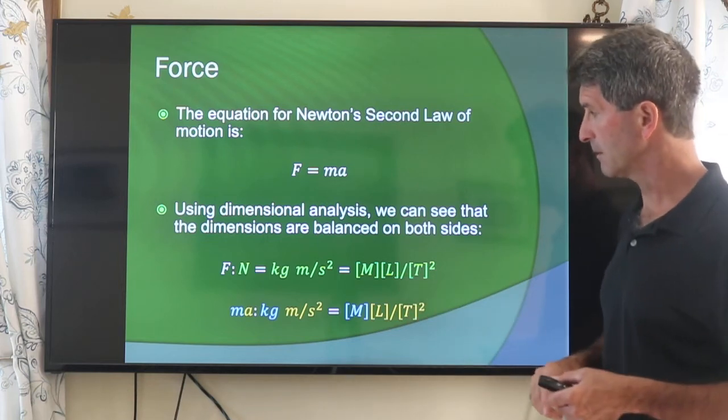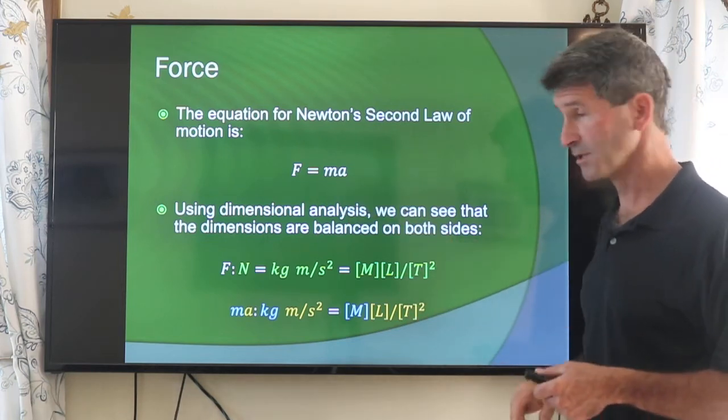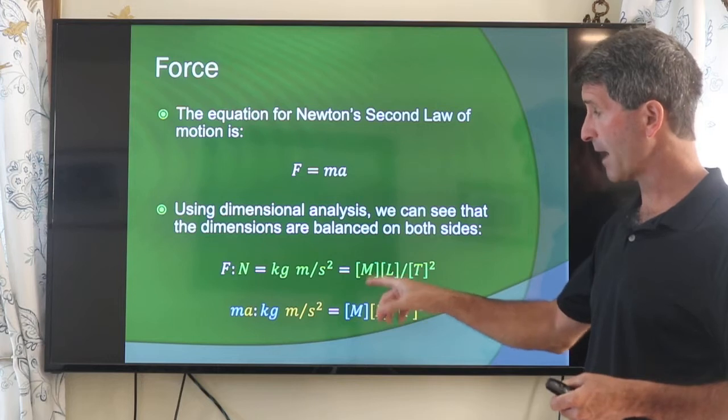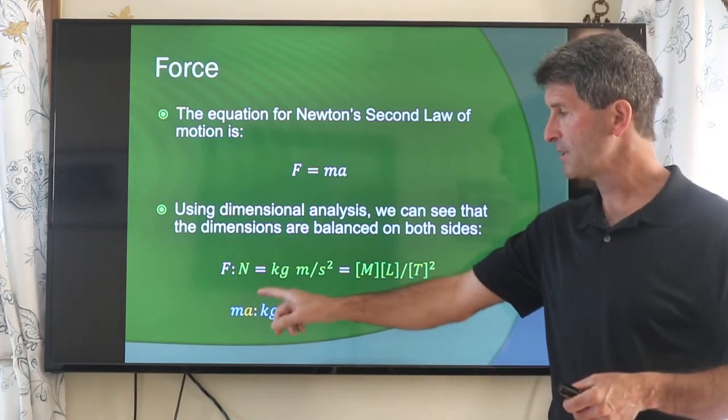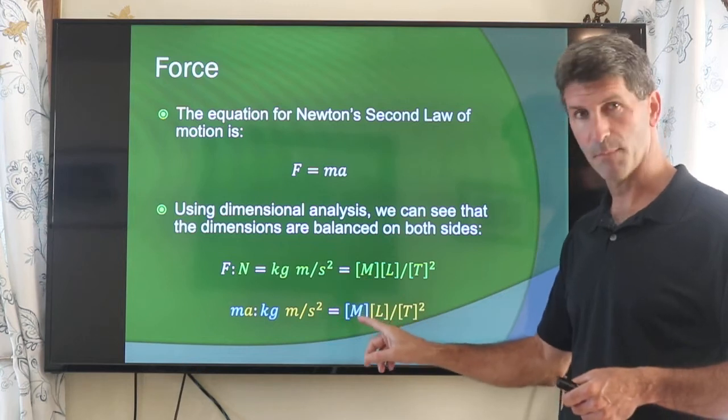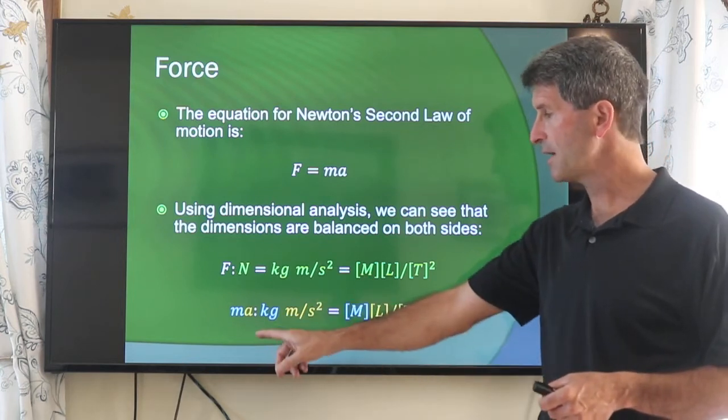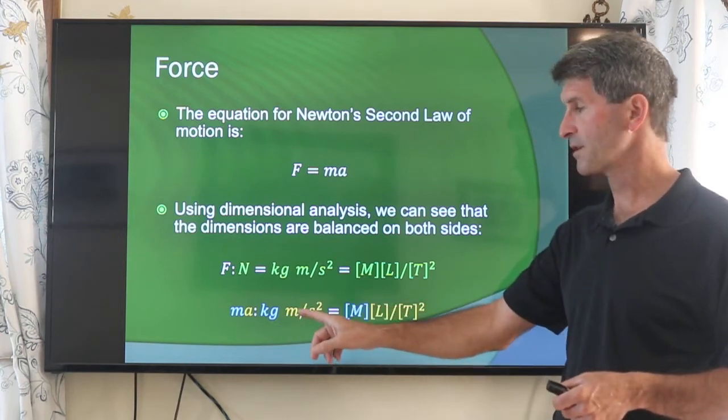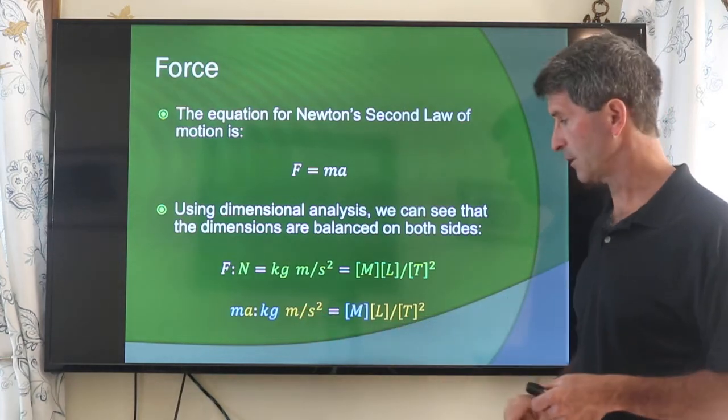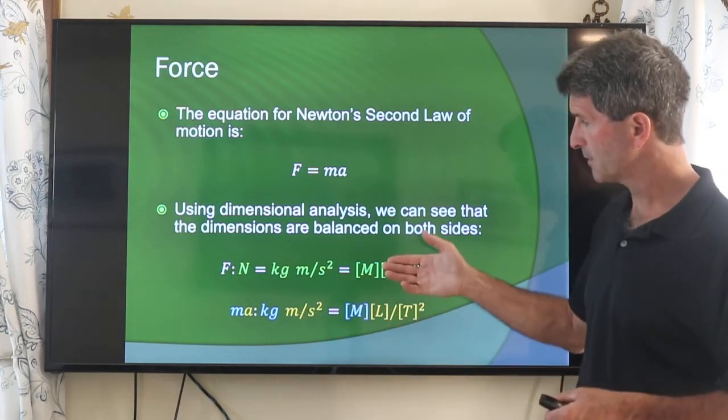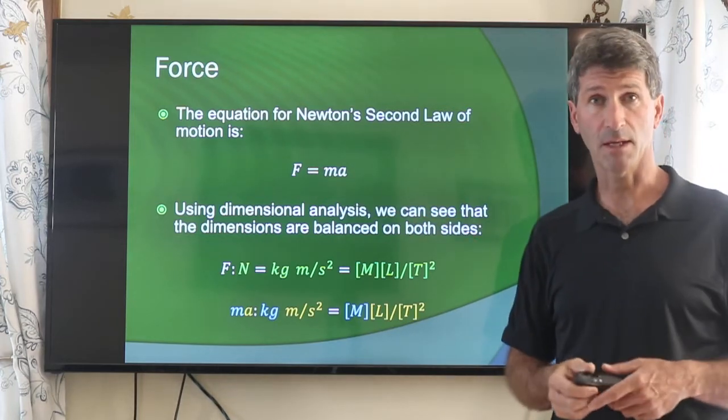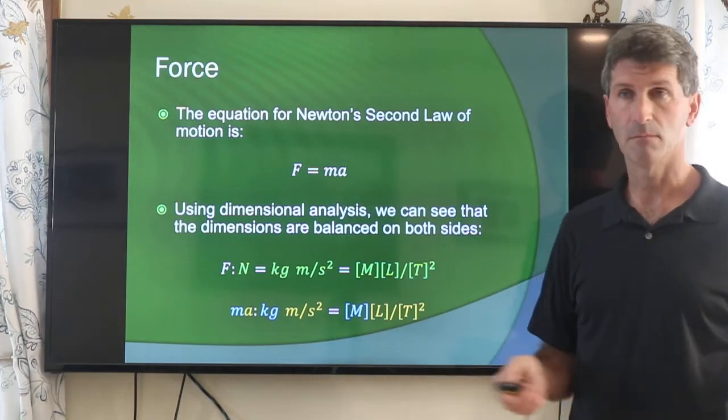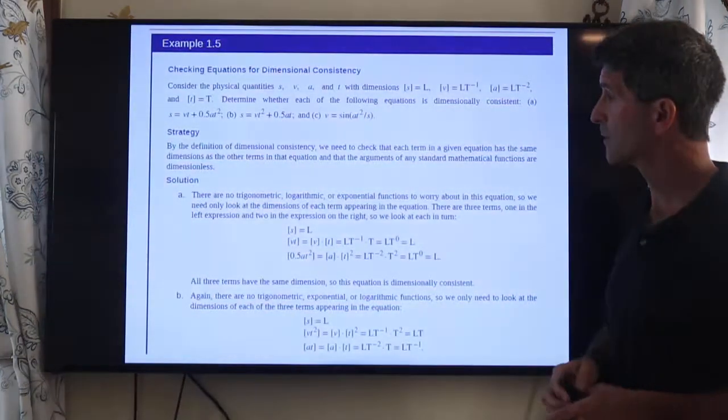On the other side, the equation mass times acceleration, you better have the same thing. You better have mass length divided by time squared. Well here, ma, m is kilogram, units of mass. A is acceleration, units of length divided by time squared. And you can see that this dimension matches this dimension. So this, through dimensional analysis, is valid.